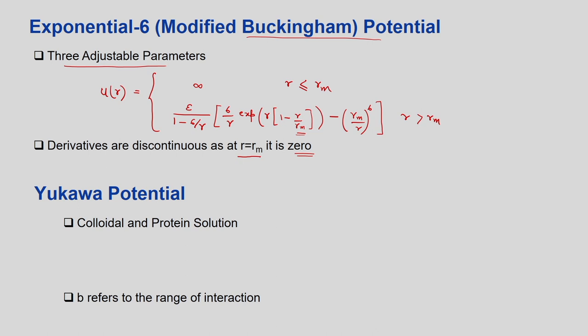Another model is the Yukawa potential, primarily used for colloidal protein solutions where there is no net charge. The Yukawa potential is: U(R) = infinity for R ≤ σ, and U(R) = −(σ·ε/R)·exp(−B/(R − σ)) for R > σ, where B refers to the range of interaction. This model also suffers from the disadvantage that it is again discontinuous at R = σ.